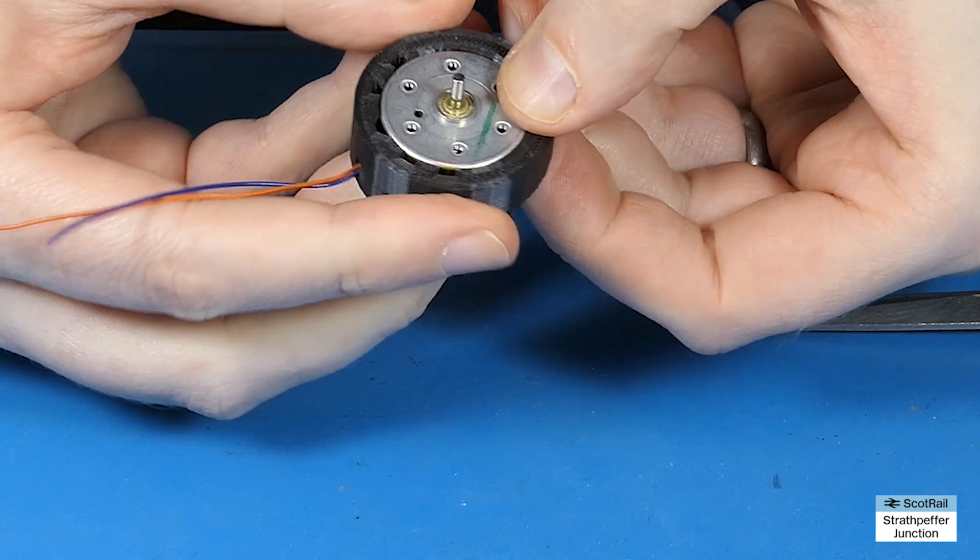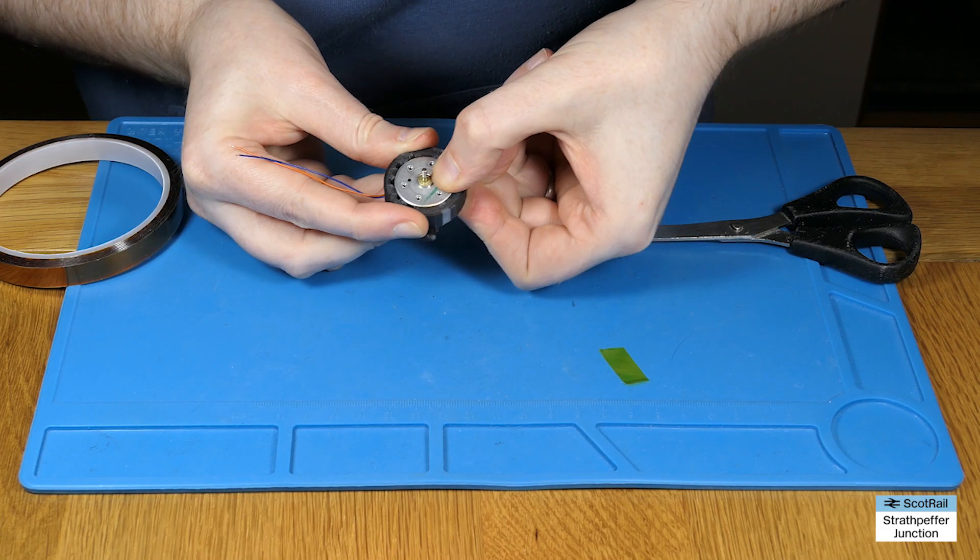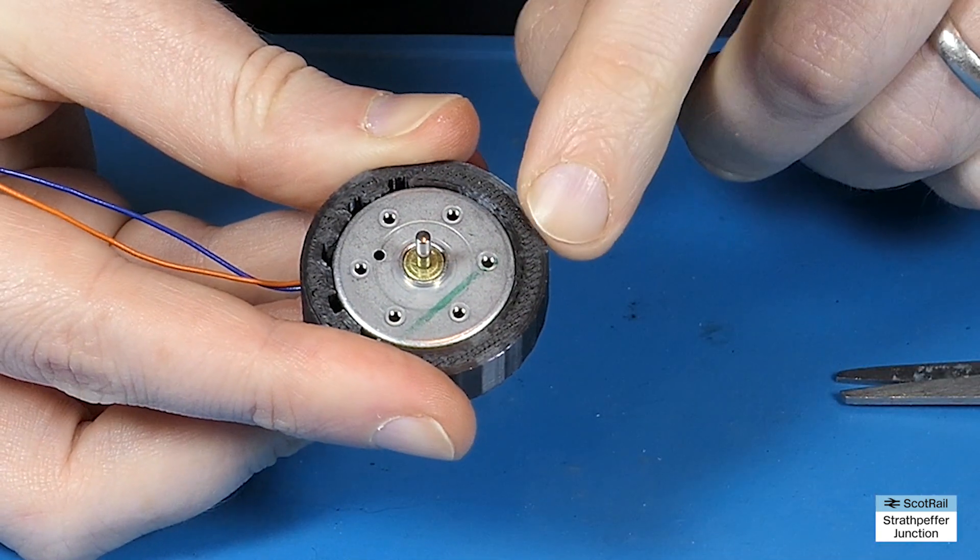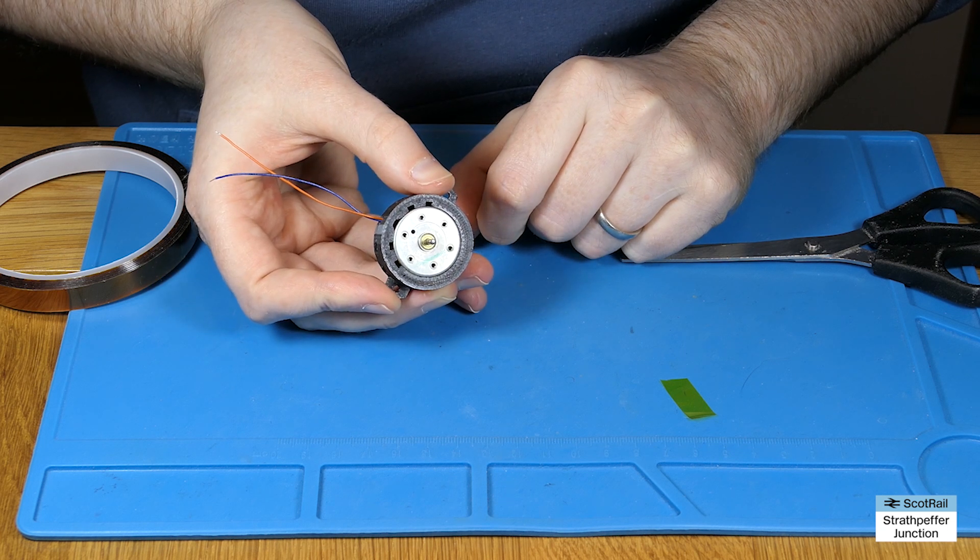Excellent. That's in place. And now just to test that it is sufficient. There we go. So there's no movement at all there this time, which means that this is all dead set, ready to go and be installed into the locomotive.